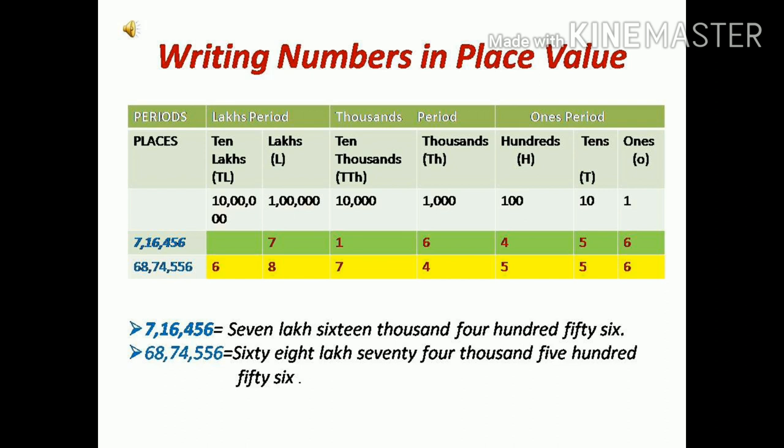Let's place the digit in the place value chart, starting from the ones period, then place the digit in the thousands period, and next move on to the lakhs period. While writing a number, as per the Indian place value system, separate the periods with a comma. For example, please look at the screen: 7,16,456 — we have separated using a comma according to the periods.